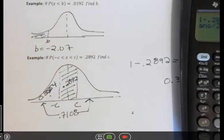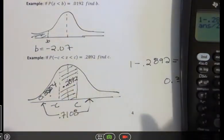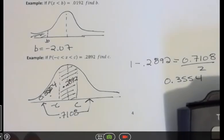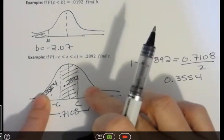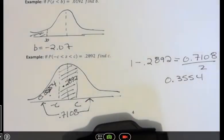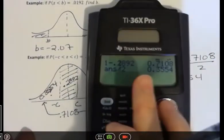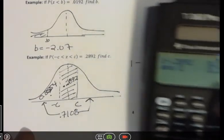All right, and that's what I'm going to put in my calculator. So I had to do a few things to make that happen. I had to take away the area that I was given to find the outer edges, and then divide that by 2 because I was looking at both tails, and I really just wanted to look at the left one. So 0.3554.